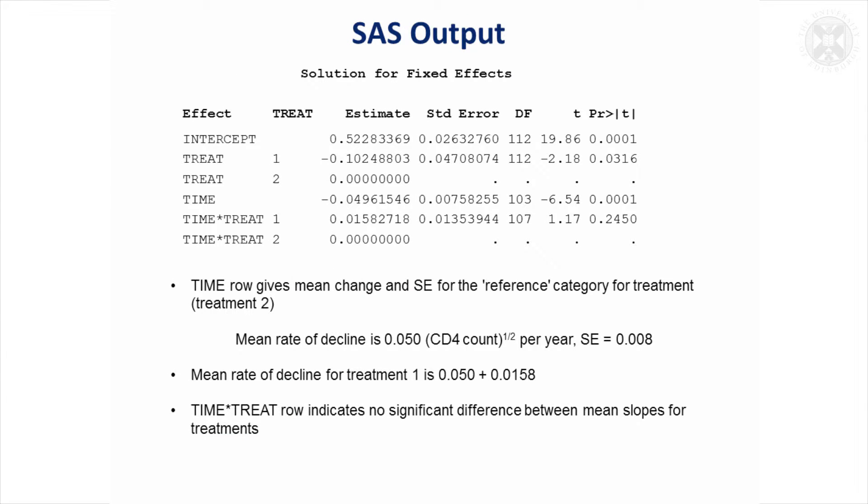So this was the SAS output for the fixed effects. This time row gives the actual estimate of the slope and its standard error. It's not the overall slope. It's actually the slope for the reference category, which here is treatment two. You've got estimates of naught. So that's the slope for treatment two and its standard error.